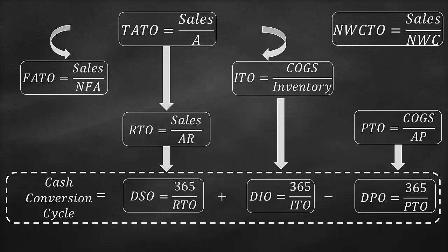For asset items, it is better to have a high turnover or shorter days. Liabilities are the opposite — for liability items, it is better to have low turnover or longer days. It is better to have a higher total asset turnover ratio, fixed asset turnover ratio, and receivables turnover ratio, and a shorter days sales outstanding ratio.